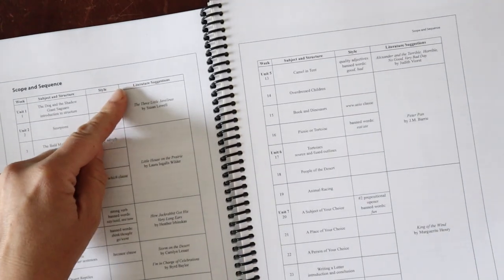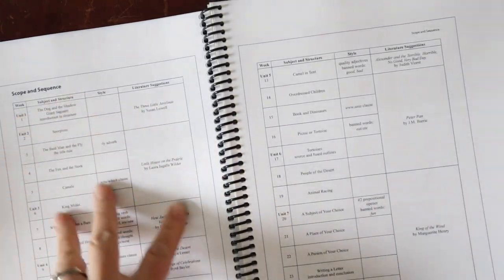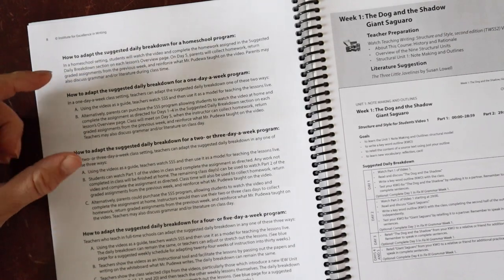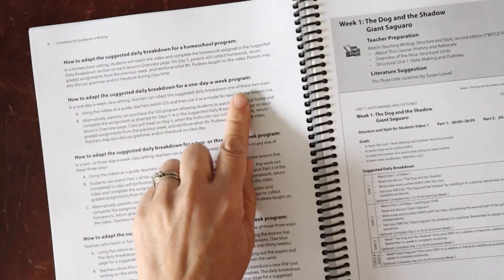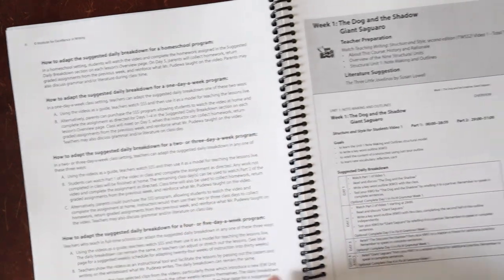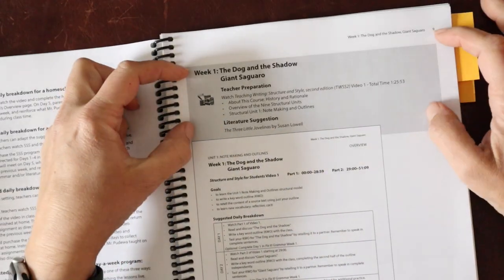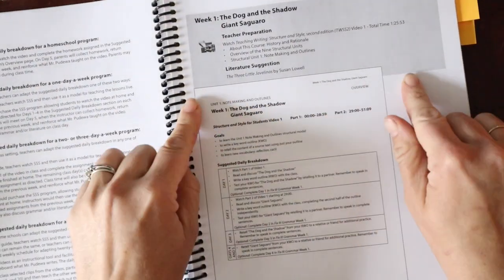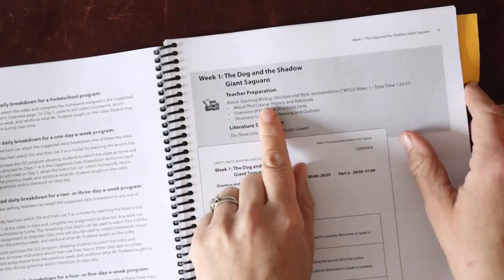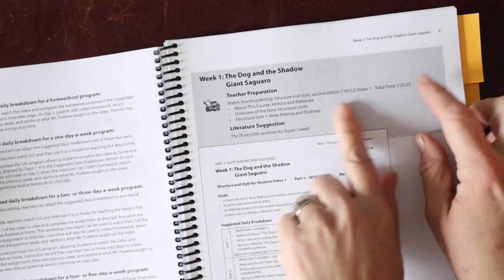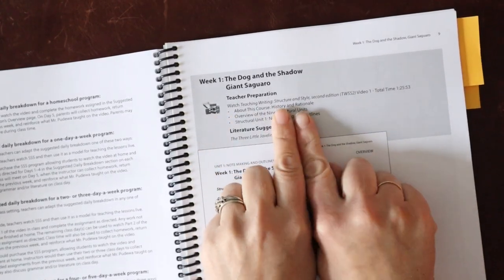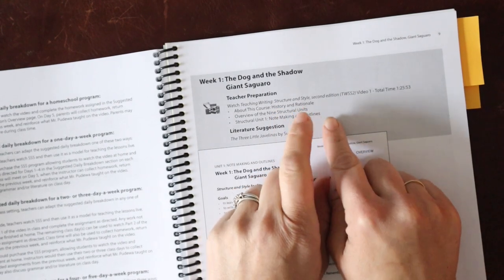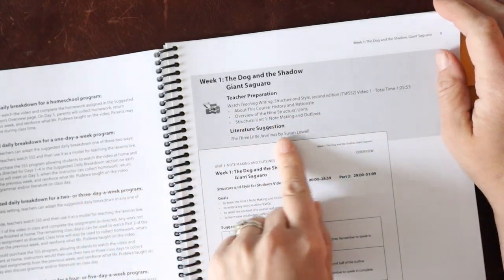They have suggested literature that goes along with some of the subjects. They have a section on how to break this down for different schedules - one day a week program, two or three, four or five days. The gray boxes are only in the teacher manual. We have the teacher preparation. It says watch Teaching Writing Structure and Style. Do I recommend this? Yeah, long-term this is a really great course. Is it required? In my opinion, no.